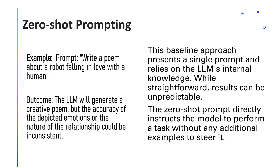Zero-shot prompting presents a single prompt and relies on the LLM's internal knowledge. While straightforward, results can be unpredictable. An example zero-shot prompt is: 'Write a poem about a robot falling in love with a human.' In response, the LLM might generate a creative poem, but the accuracy of the depicted emotions or the nature of the relationship could be inconsistent.